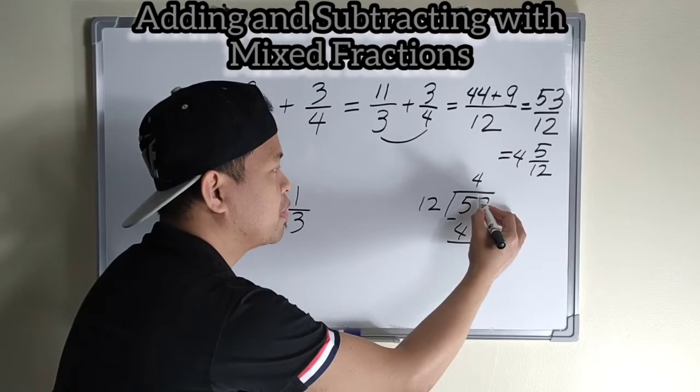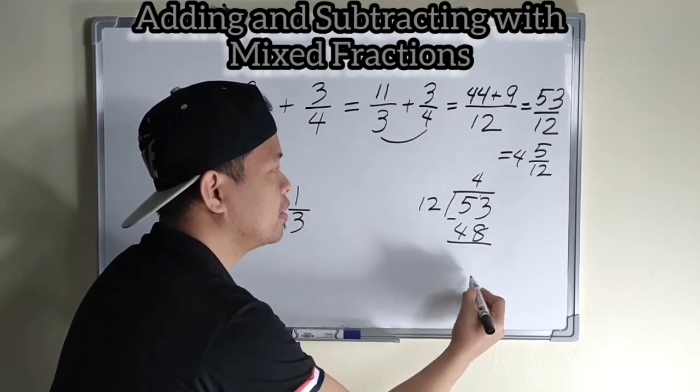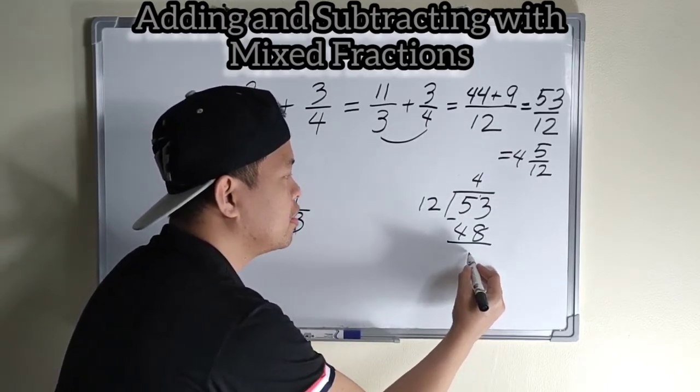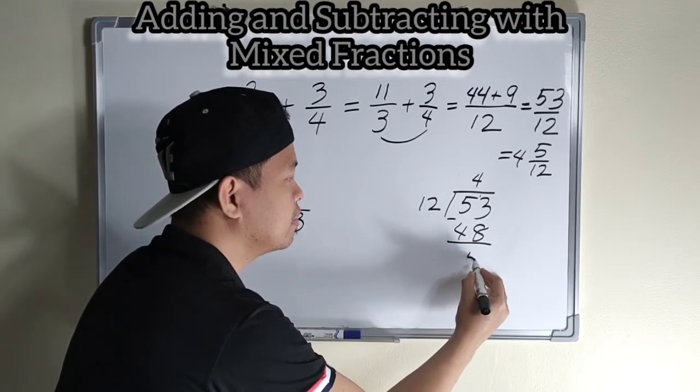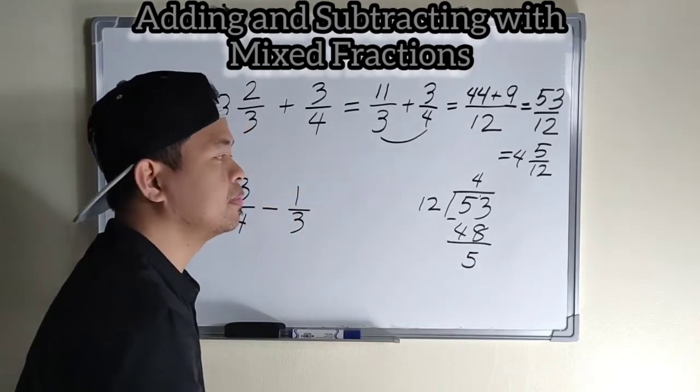Fifty-three minus forty-eight is? Borrow one from five. Thirteen. Then, thirteen minus eight is? Five.